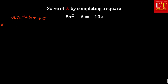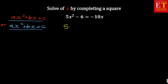With an equal sign, you can also arrange it as ax squared plus bx equals c. In this case, we're going to have 5x squared plus 10x, because the negative 10 jumps the equal sign and becomes positive. And the negative 6 jumps the equal sign to become positive 6. That was step number one.